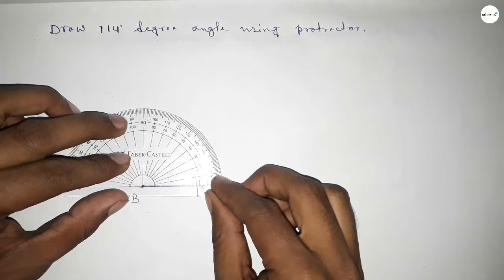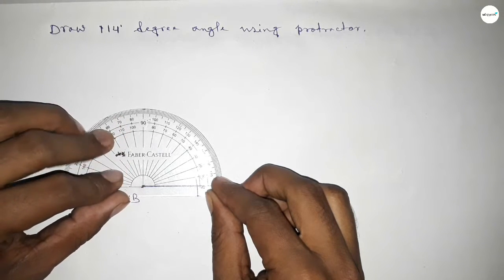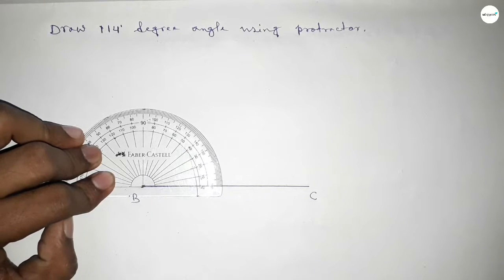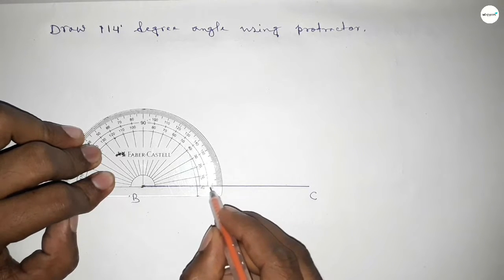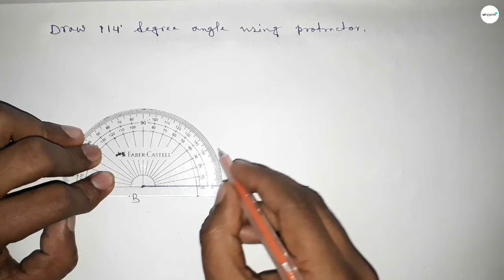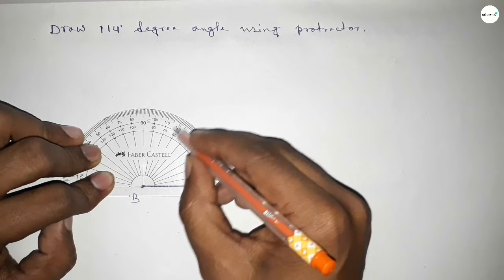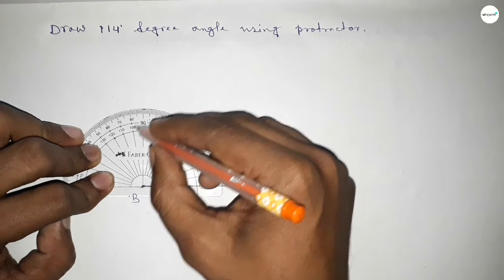So this is the starting angle: 0, 10, 20, 30, 40, 50, 60, 70, 80, 90.